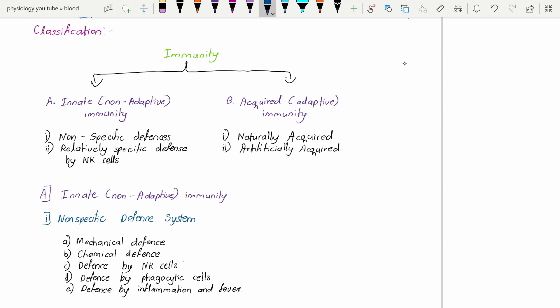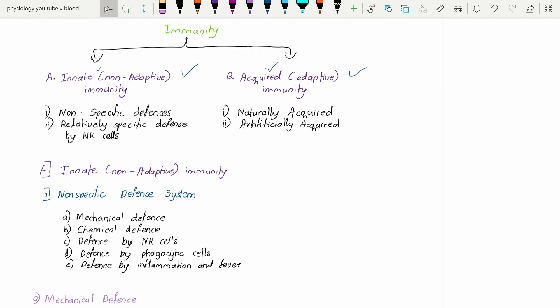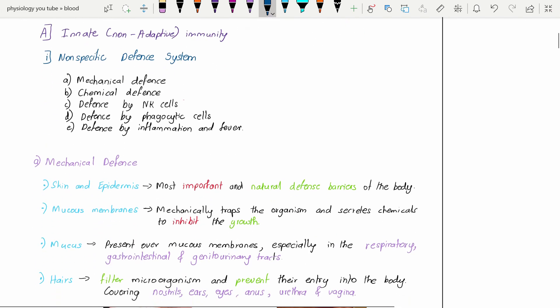We will classify immunity. It is broadly classified into innate immunity or non-adaptive type of immunity, and acquired immunity or adaptive type of immunity. As their name suggests, innate is present by birth and acquired is acquired throughout our life. Sometimes immunity may be artificial or naturally acquired, and innate immunity is non-specific or relatively specific by natural killer cells.